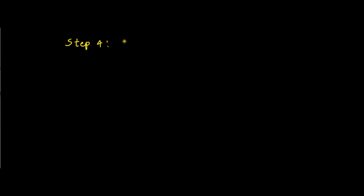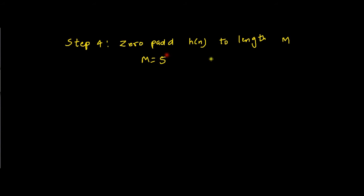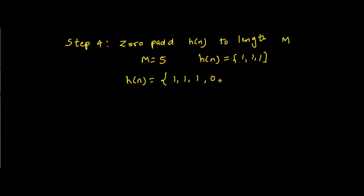Step 4: zero pad h of n to length m. Since m equals 5 and h of n is 1, 1, 1, we zero pad h of n so that it also has length 5. After zero padding, h of n becomes 1, 1, 1, 0, 0.